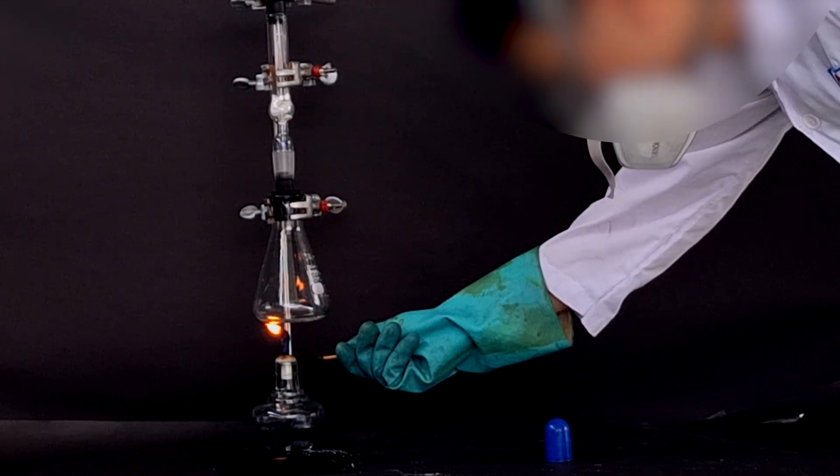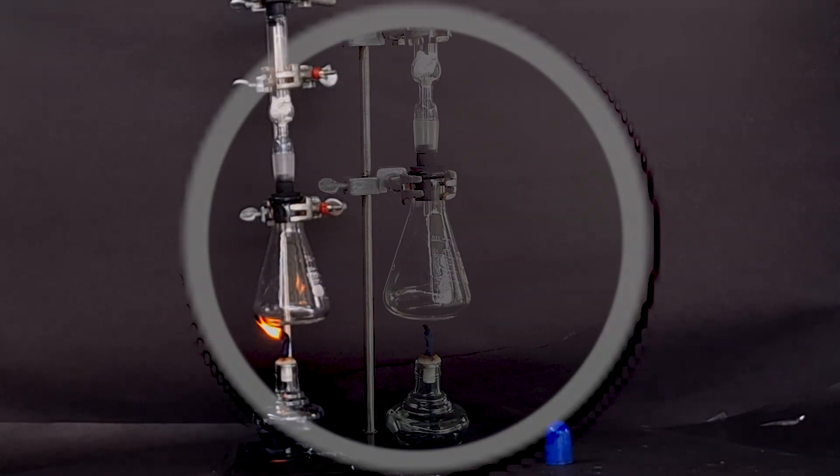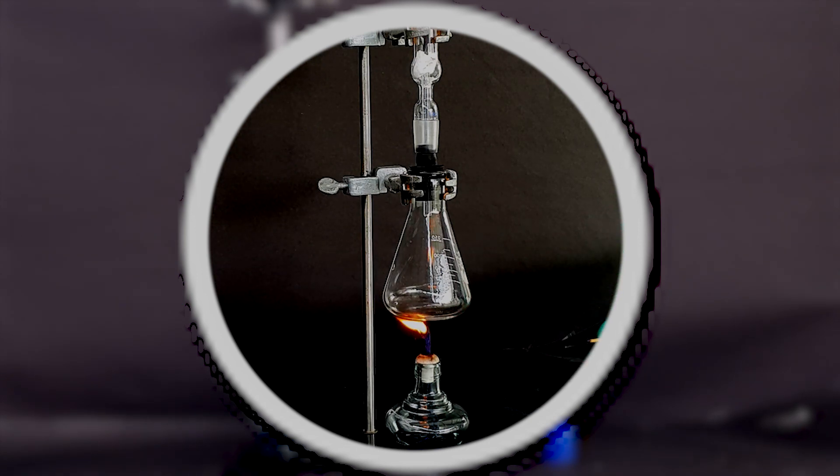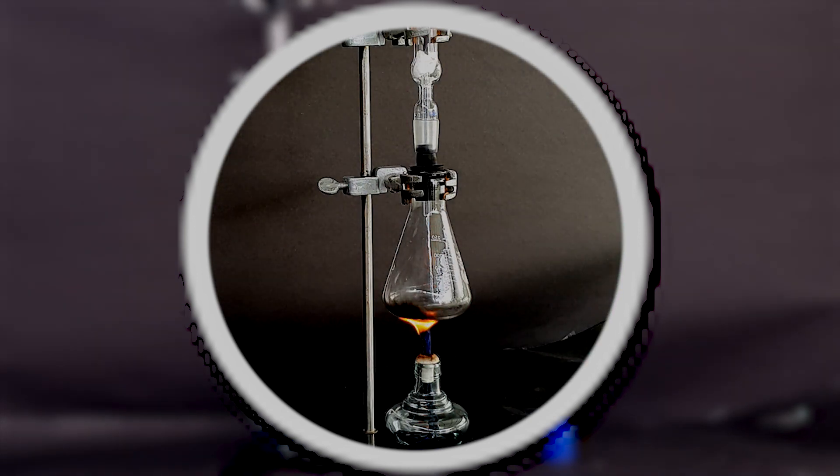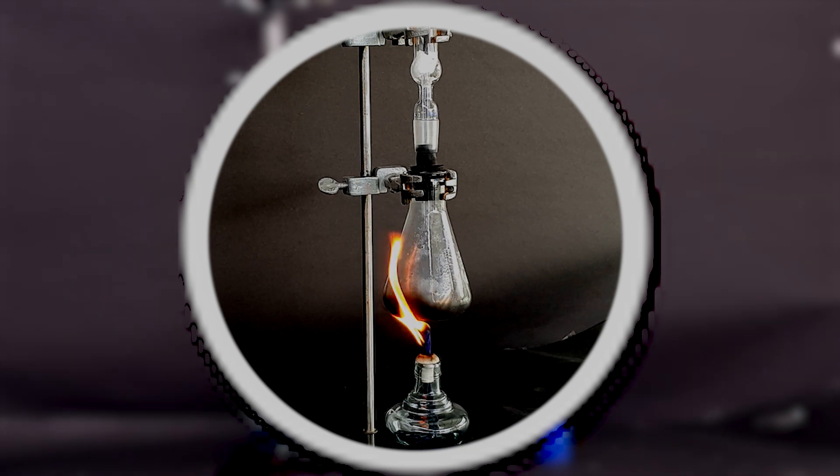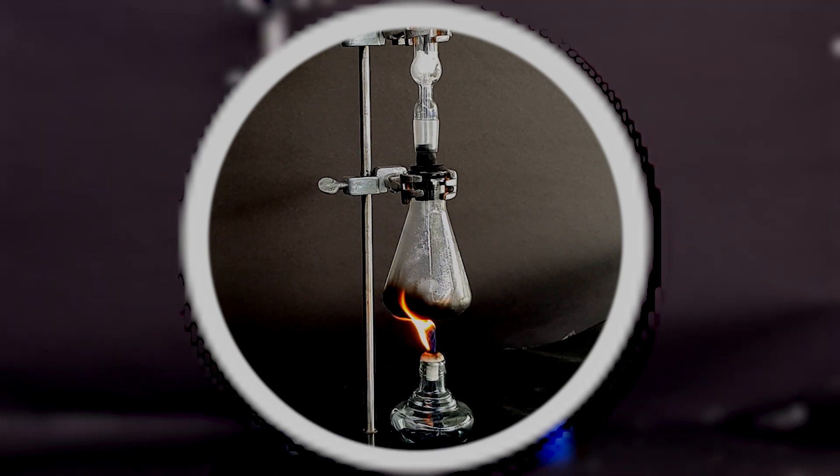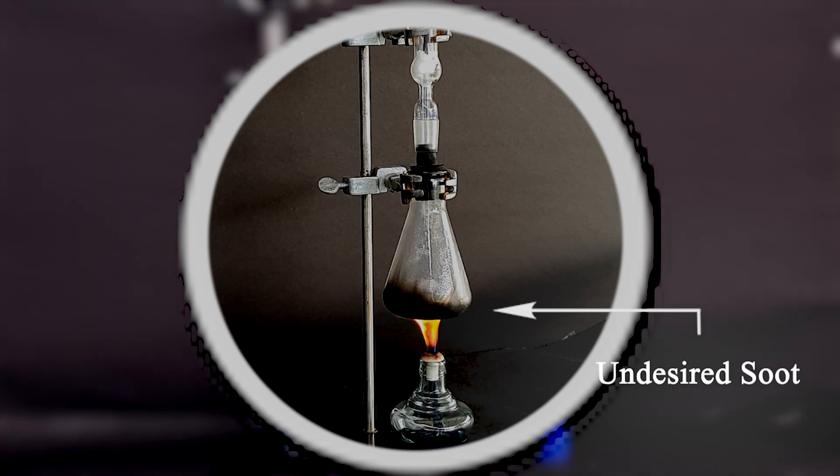As seen previously in this video, I am using an oil lamp filled with kerosene. However, it will be beneficial to instead use a Bunsen burner, or replace the kerosene with either methanol or ethanol, as the flames produced by these substances have less soot and odor.